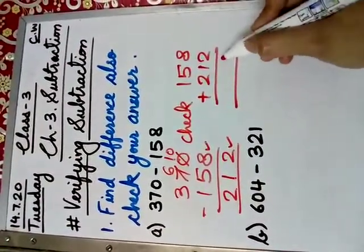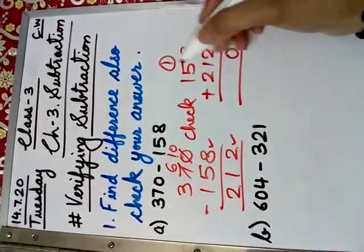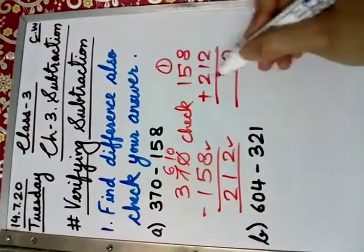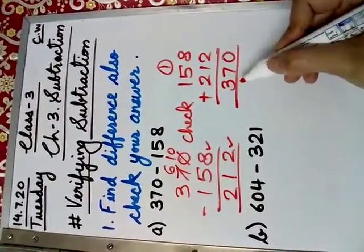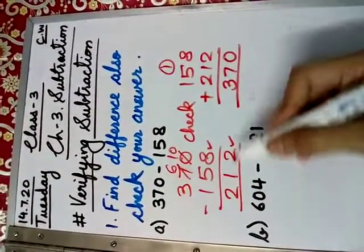9, 10. 10, we cannot write 10. We will write 0 and 1 as carry. 1 plus 5 is 6. 6 plus 1 is 7. 1 plus 2 is 3. Isn't this number same, 370, 370? That means your answer is correct.